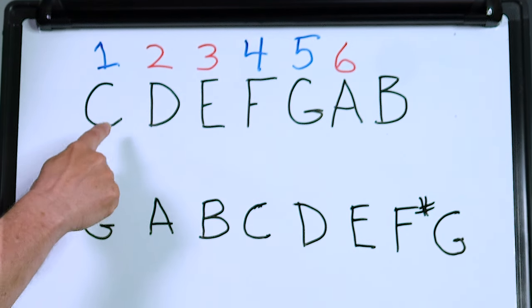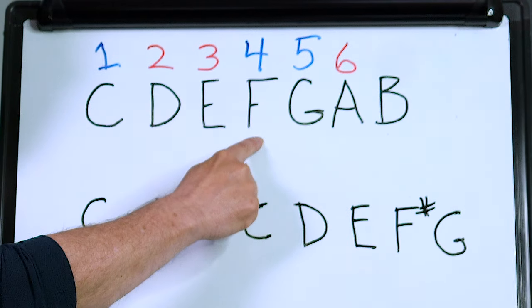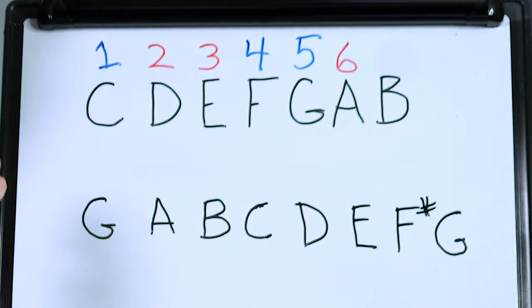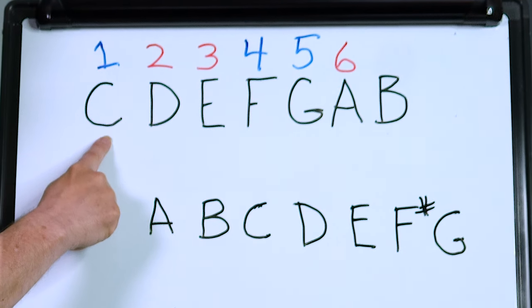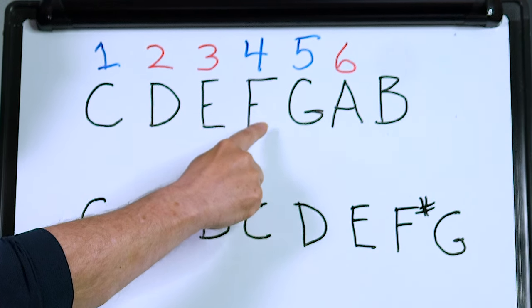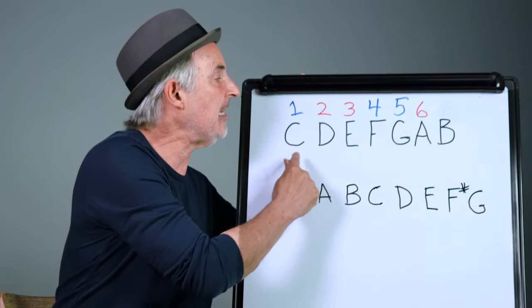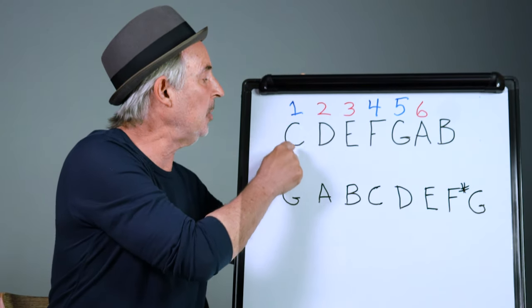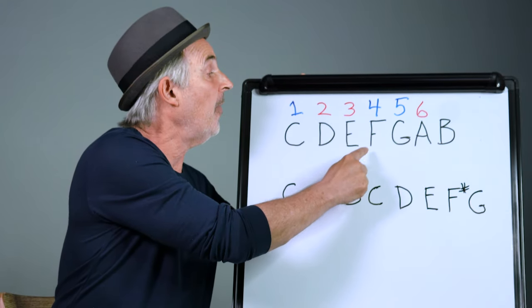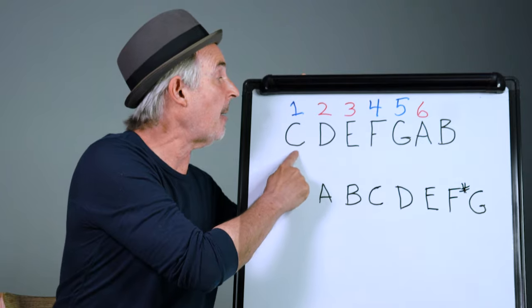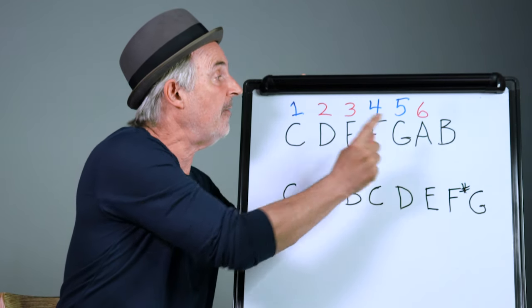If we make a chord out of the one, the four, and the five, each of these chords will be a major chord. So in this case this will be a C major, an F major, and a G major. If you're using the notes right out of the scale and you build chords out of the notes in the scale, it's always going to fall as a major on this one, four, and five.